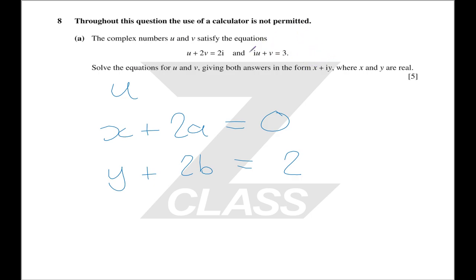Do the same thing on the other equation, equating real and imaginary parts. That will give you another two equations you can solve. You will have equations you can substitute in and figure out what u and v are. Four equations, four unknowns — you can solve that.